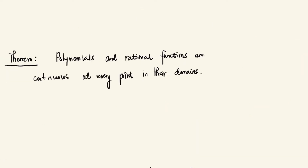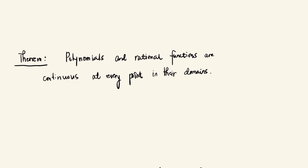In conjunction with the topic of continuity, we have a theorem: polynomials and rational functions are continuous at every point in their domains. Take note — they are continuous on their domains. So in order to identify if a polynomial or rational function is continuous, it must be defined on its domain; otherwise, it is not continuous there.